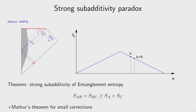This can be stated precisely using the strong subadditivity inequality: for three systems A, B, C, we have S(AB) + S(BC) ≥ S(B) + S(ABC). After the Page time, in order to restore unitarity we need S(AB) < S(A) — the entanglement entropy of the radiation should be decreasing. But Hawking predicts B and C are in a pure state together (S(BC) = 0), while S(C) > 0, so the inequality forces S(AB) > S(A), contradicting what's needed for unitarity.